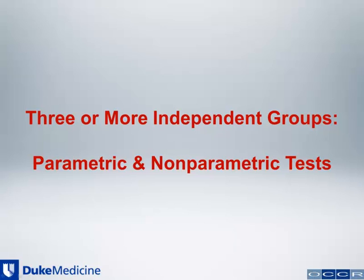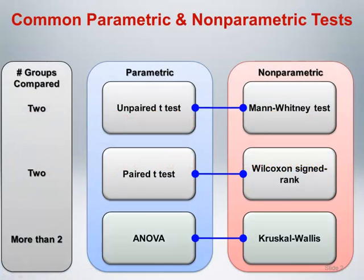Let's continue our discussion of parametric and nonparametric tests and discuss analyzing three or more independent groups. In this section, we will introduce and discuss analysis of variance, usually referred to as ANOVA, and the Kruskal-Wallis test. Both tests are similar in structure to their two independent group analogs, the unpaired t-test and the Mann-Whitney test respectively, and are essentially generalizations of these tests to more than two groups.